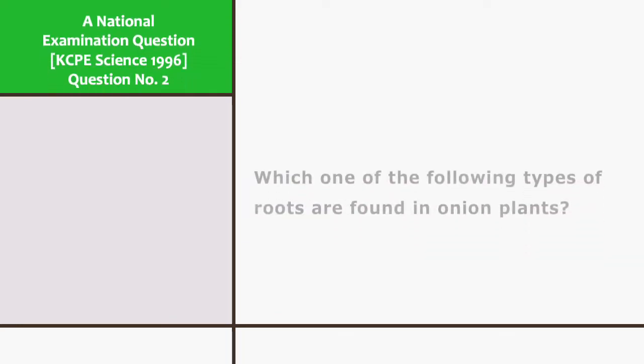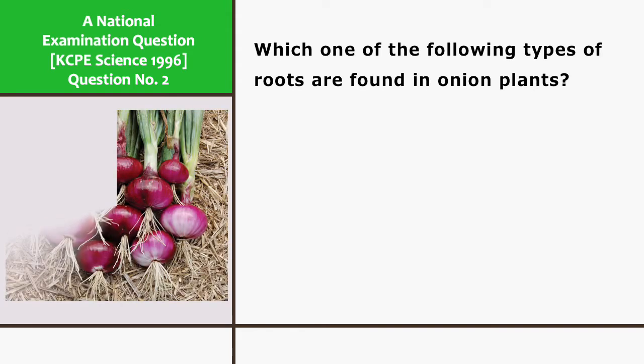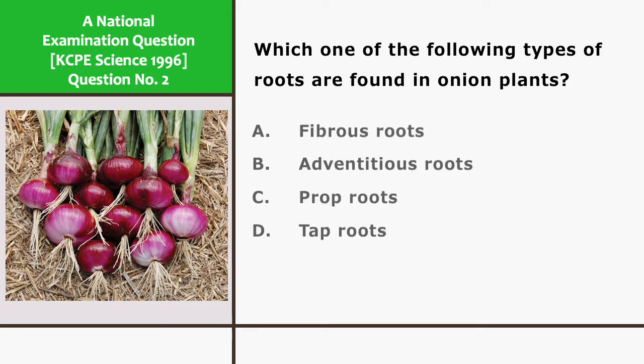Which one of the following types of roots are found in onion plants? A. Fibrous roots B. Adventitious roots C. Prop roots And D. Tap roots.